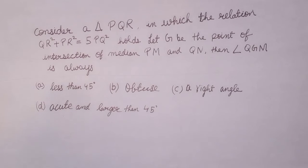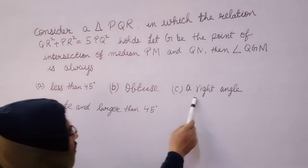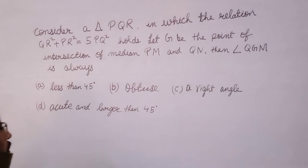First option: less than 45 degrees. Second option: obtuse. Third option: right angle. Fourth option: acute and larger than 45 degrees.